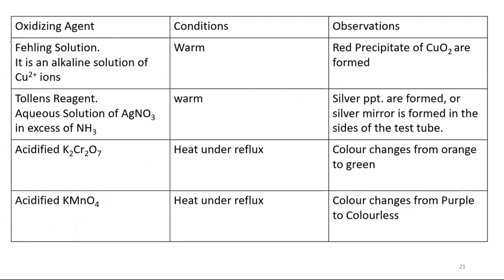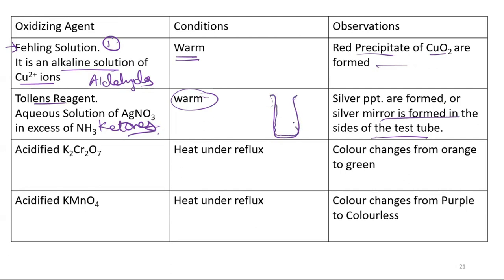Oxidizing agents: first, Fehling's agent, an alkaline solution of copper(II), is used for aldehydes. Tollens reagent is used for ketones. With warm conditions, red precipitate of copper(I) oxide is formed with Fehling's. Tollens reagent also has to be warmed, and silver precipitate or silver mirror is formed in the sides of the test tube. Acidified K2Cr2O7 can also be used under reflux, and the color changes from orange to green. Acidified KMnO4 can also be used with heating under reflux, and the color changes from purple to colorless.